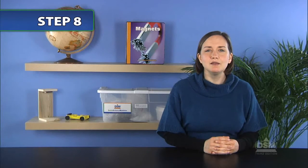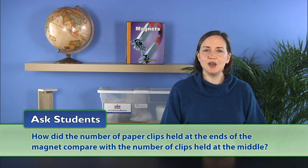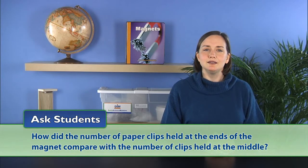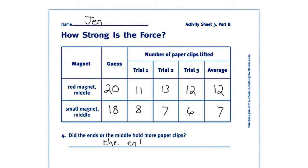Then ask students, how did the number of paperclips held at the ends of the magnet compare with the number of clips held at the middle? Students should find that the end of the magnet held more paperclips than the middle of that same magnet.